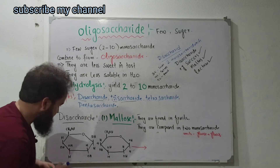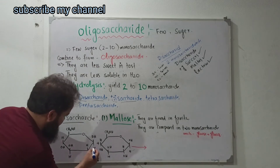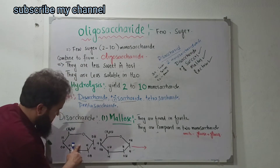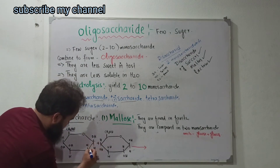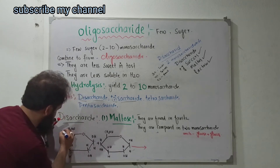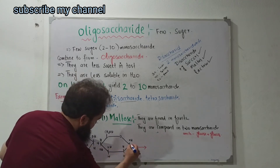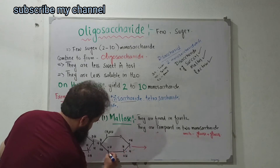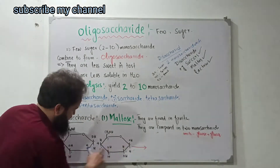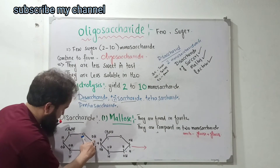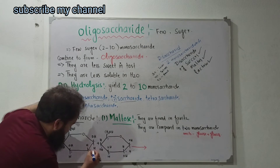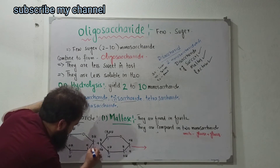Let me show you the monosaccharide — that means glucose. Glucose has carbons 1, 2, 3, 4, 5, 6. Carbon-1 has an H group, and carbon-4 has an OH group. These are the positions relevant for bond formation.